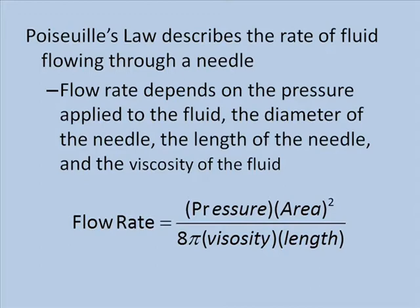Algebraically, we can express Poiseuille's law as the flow rate equals the pressure times the cross-sectional area of the needle squared, divided by 8π times viscosity times the length of the needle.